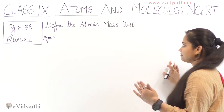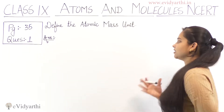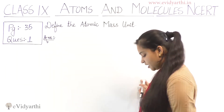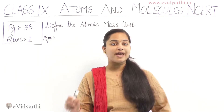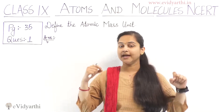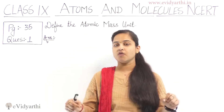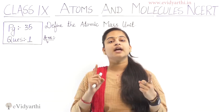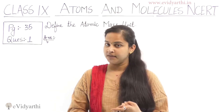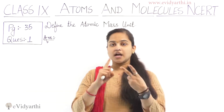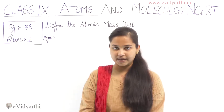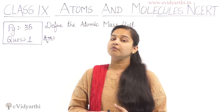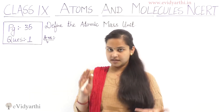The question is: define the atomic mass unit. So what is atomic mass unit? One atomic mass unit equals exactly 1 by 12 the mass of one atom of carbon-12, and this is known as the atomic mass unit. Carbon-12, which is the isotope, was chosen as the standard reference for measuring atomic masses.